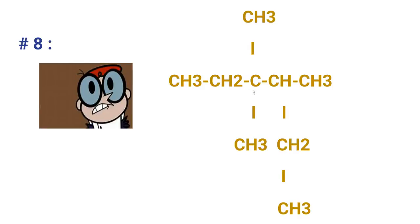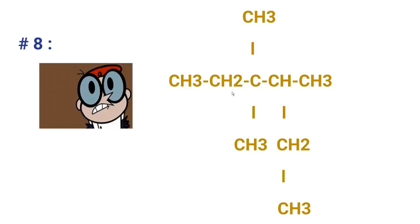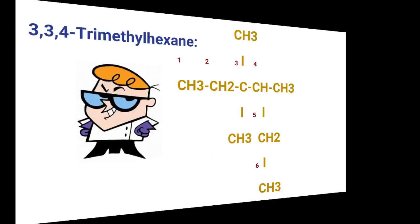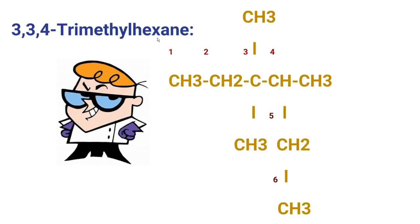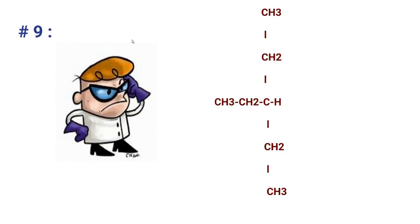Here is the next compound. Be careful — look at the longest continuous chain and see where the substituents are present. The name is 3,3,4-trimethylhexane. The longest continuous chain consists of six carbons, not five — you must be careful not to miss the hidden chain. On the third carbon, two methyl groups are located, and on the fourth carbon, one methyl group is located, making it 3,3,4-trimethylhexane.